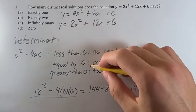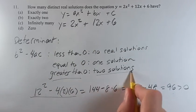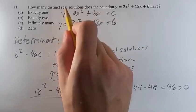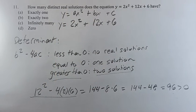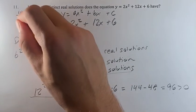So that means, based off of the rules that we just set out, it's greater than 0, that means there's two solutions, real solutions, to the equation y equals 2x squared plus 12x plus 6, which is going to be our answer b.